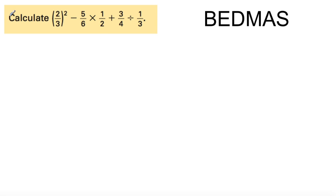So we have our equation here, we have some brackets with exponents, all fractions. Now what are we going to do to calculate this? How are we going to solve this? We're going to use BEDMAS. We've done this before, you know how to use this.